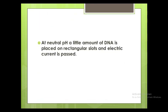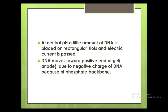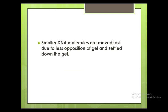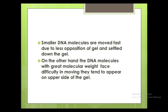At neutral pH, a small amount of DNA is placed in the rectangular slots and electric current is passed. DNA moves toward the positive end of the gel — the anode — due to the negative charge from the phosphate backbone in the DNA chain. The gel separates DNA of different sizes due to friction. Smaller DNA molecules move faster due to less resistance and settle toward the end of the gel, while DNA molecules with greater molecular weight face difficulty moving and tend to appear on the upper side of the gel.